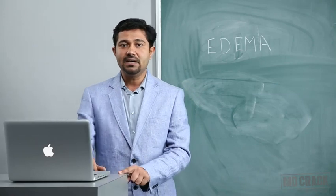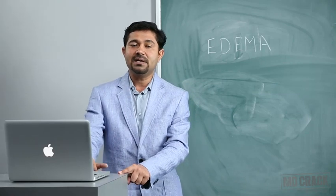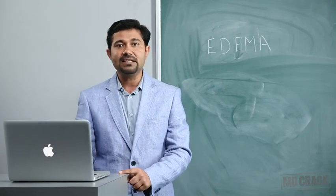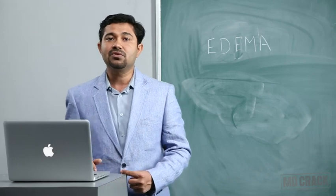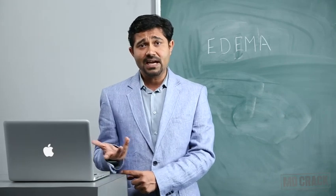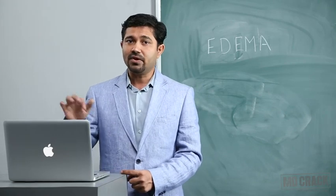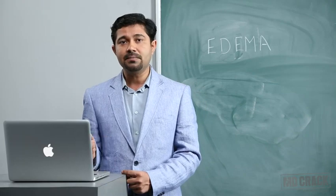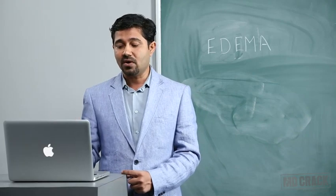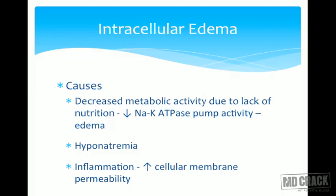So the number one cause of intracellular edema is decreased metabolic activity, either due to ischemia or toxic effects, which ultimately affects the sodium-potassium ATPase pump and causes edema. The next cause is hyponatremia, which also causes intracellular edema.